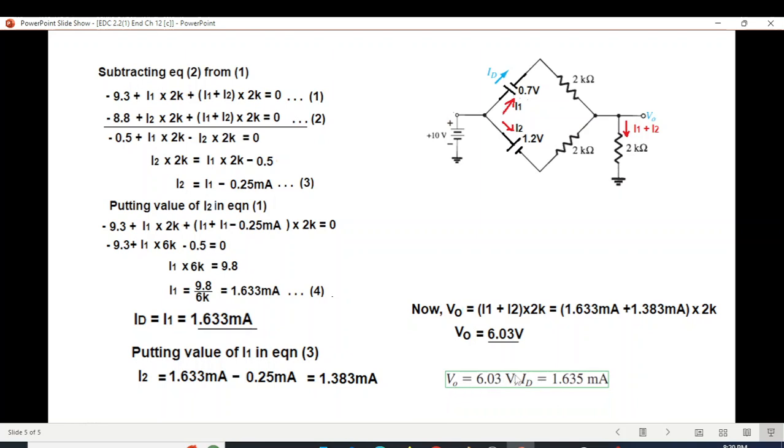And this is the answer given in the book. The fourth digit is we have got 633 and the book is 635. So anyway, this is how you can easily solve this type of a question. I hope you have been able to follow this. Thank you.